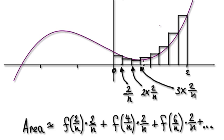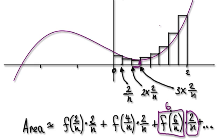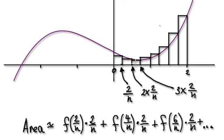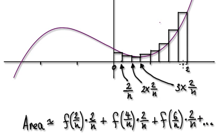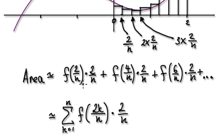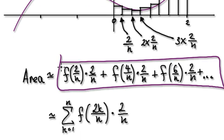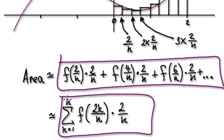The next one: you need the height of this strip, so this here is the height, and the width is this. Height times width gives you the area of that strip. Then it goes on and on and on. You can summarize this whole thing using sigma notation.